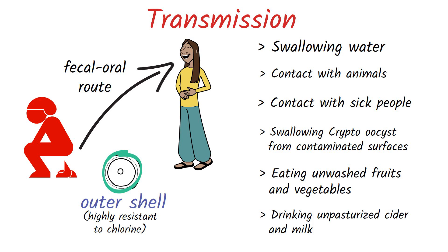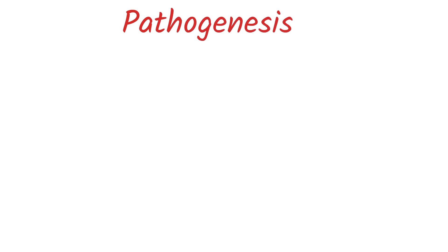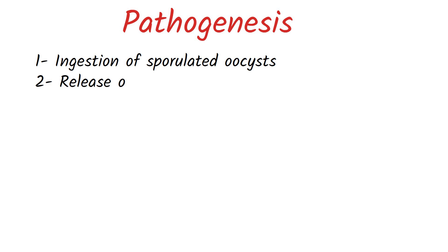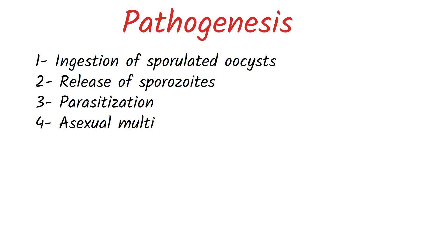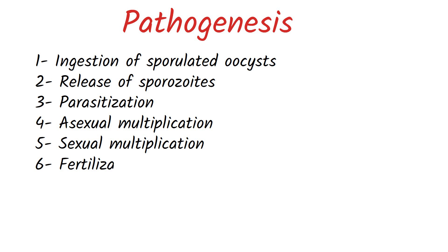Now let's talk about its pathogenesis. The life cycle of cryptosporidium can be broken down into the following steps: ingestion of sporulated oocysts, release of sporocytes, parasitization of epithelial cells, asexual multiplication, sexual multiplication, fertilization, sporulation, and excretion and transmission.